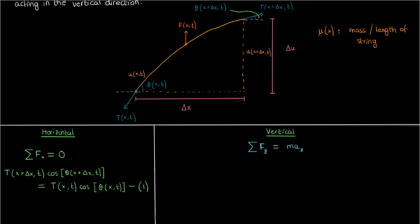And this makes sense, because the vertical velocity would just be du/dt, and so the acceleration would be another time derivative tacked on. So we have the sum of Fy equals m times the second partial of u with respect to t, as the equation for our forces in the vertical direction.